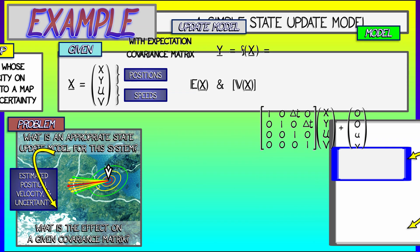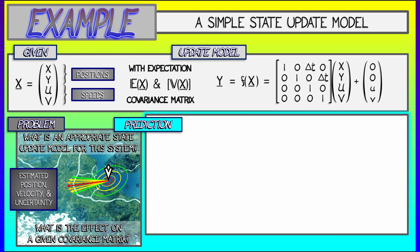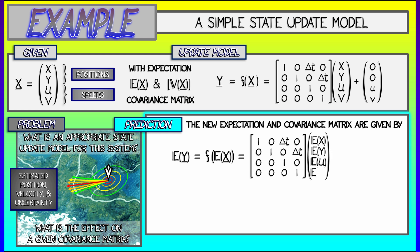Okay. Now, given all that, what is the prediction? Well, this state update model is meant to act on the prediction for what your state is, on the expectation. So the expectation of y is what I get by plugging in the expectation for x into this model. So I get that matrix times e of x plus this constant vector.